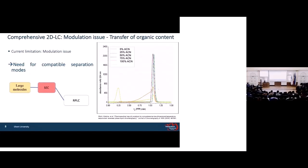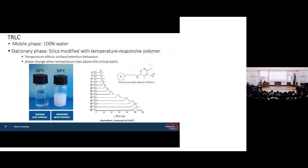One option is size-exclusion chromatography, which is compatible with RPLC, but it's only suitable for large molecules. Another is ion-exchange chromatography, which needs high salt concentration and creates other problems. The last one is temperature-responsive liquid chromatography, which is completely compatible with RPLC. In this technique, the mobile phase is 100% water, and the stationary phase is silica modified with a temperature-responsive polymer. At high temperature, the polymer is completely dehydrated and behaves like an apolar stationary phase; at low temperature, it is hydrophilic and behaves like a polar stationary phase. Temperature is used instead of organic solvent, and as an example, when temperature is increased, the retention time also increases.